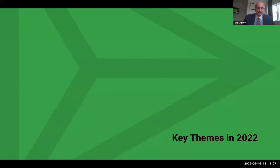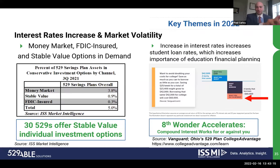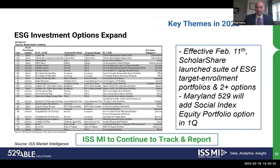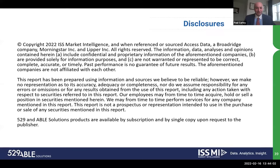ESG continues to grow — we saw ScholarShare launch their suite of ESG options. Maryland 529 will add an ESG option in Q1. Big-picture trends: advisory shares continue to expand, employer channels are important, gifting is a focus — Ascensus's gift platform has surpassed over $2 billion in contributions. Rewards remain a key item, and 529 importance will increase as the IRS removes income tax deductions for tuition and fees.